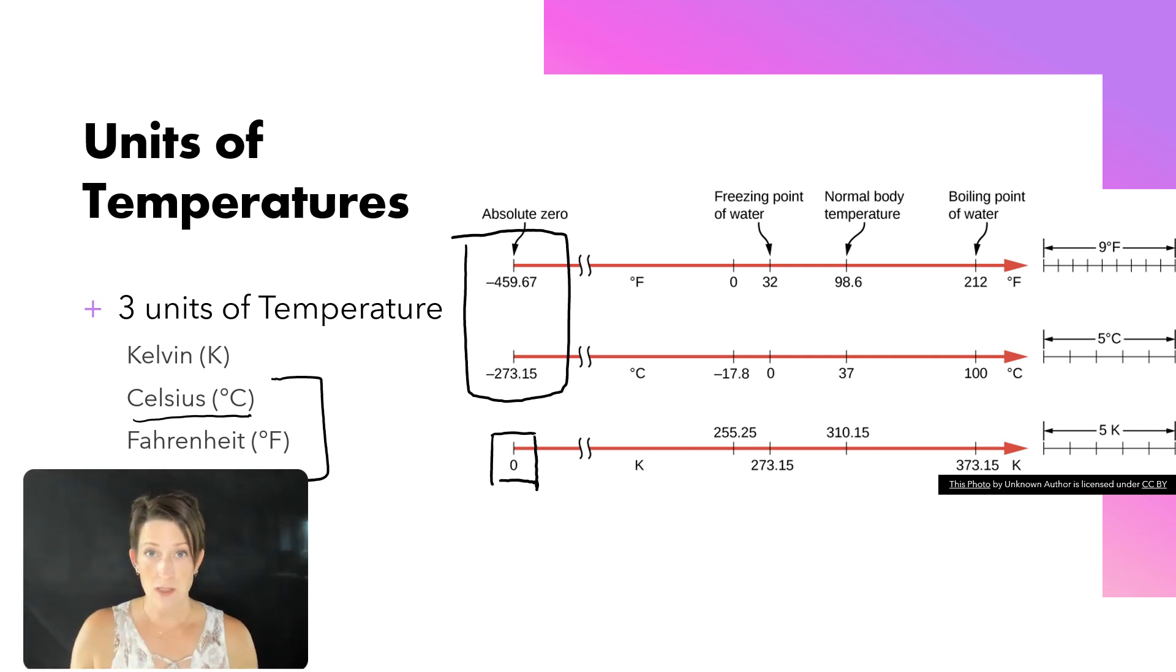Next, we look at those phase changes. Freezing water: Fahrenheit occurs at 32 degrees, Celsius zero, and Kelvin at 273.15. And then boiling: 212 Fahrenheit, 100 degrees for Celsius, 373.15 for Kelvin.